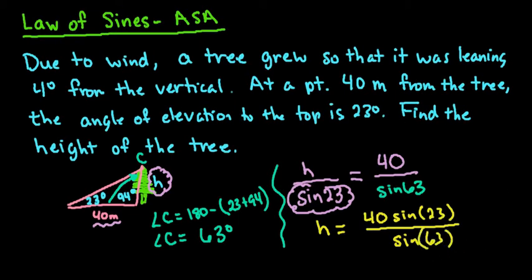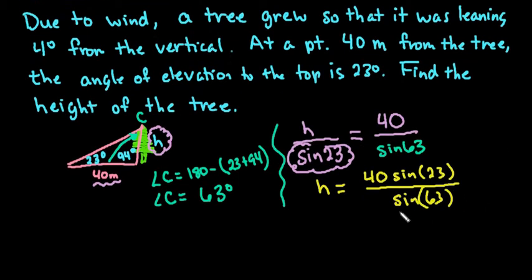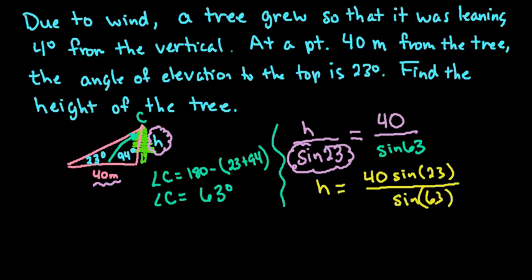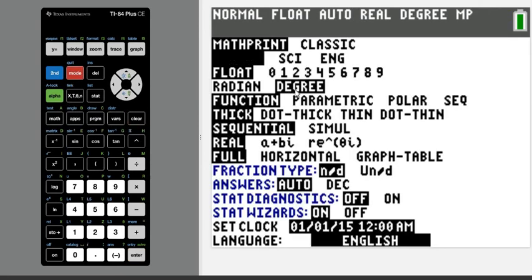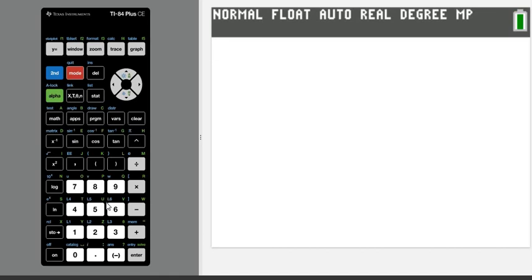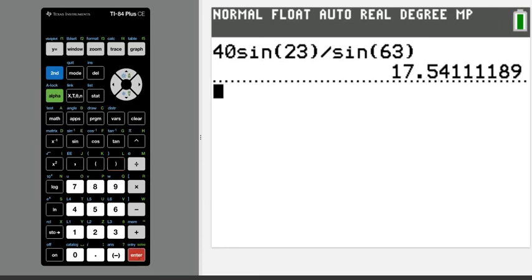It doesn't matter what calculator you're using, whether you're using a simple scientific calculator or a graphing calculator. You always want to make sure that you are in degrees whenever you are working with Law of Sines. So we are. And then all we have to do is plug in our values into here. So I would just do 40 times sine of 23, make sure you close your parentheses, divided by sine of 63. So you plug it in exactly how we had it written on paper and then just hit enter, and we end up with approximately 17.54.